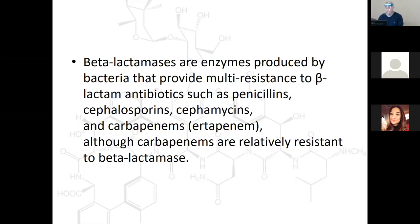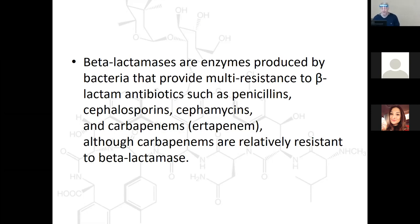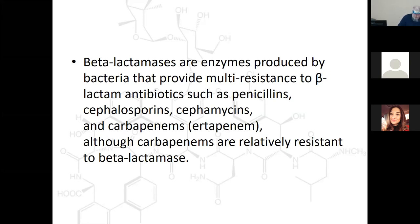Beta-lactamases are enzymes produced by bacteria that provide multi-resistance to beta-lactam antibiotics, including penicillins, cephalosporins, cephamycins, and carbapenems — although carbapenems are relatively resistant to beta-lactamases. On the list, the beta-lactam class includes penicillin, ampicillin, and piperacillin. Cephalosporins show the six-member ring to the right of the beta-lactam ring, with examples like cefazolin, cefuroxime, cefotetan, cefotaxime, ceftazidime, and cefepime. There are a lot of ceph- names.